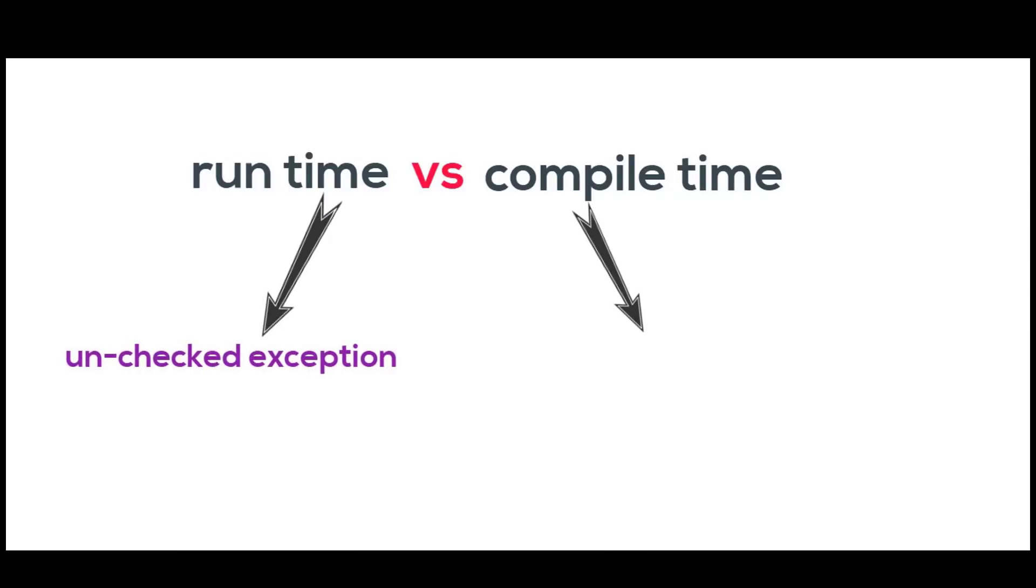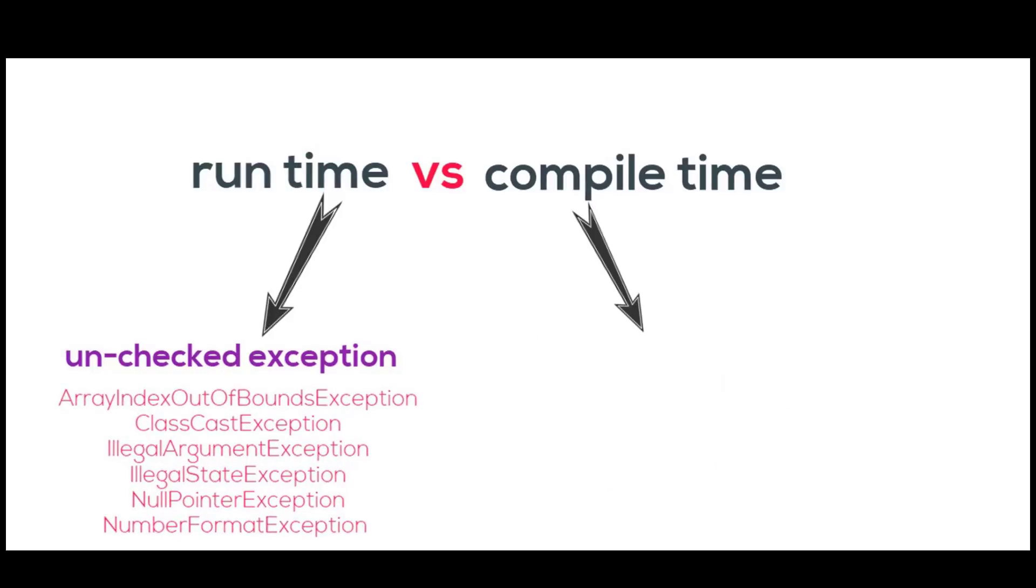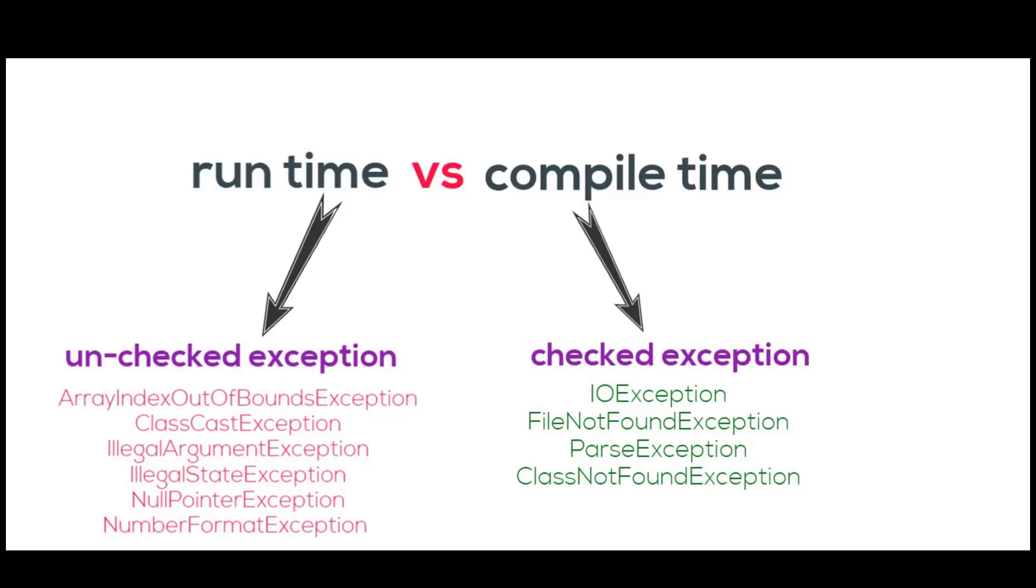Runtime exception is also known as unchecked exception. This includes programming bugs such as logic errors or improper use of an API, and so on. Runtime exceptions are ignored at the time of compilation. Examples are ArrayIndexOutOfBoundsException, IllegalArgumentException, IllegalStateException, NullPointerException, and so on.